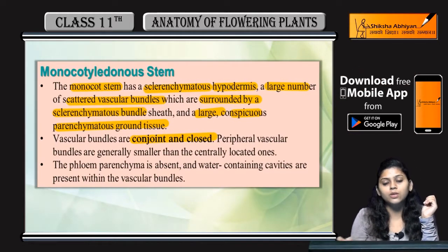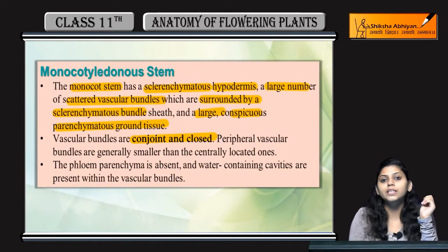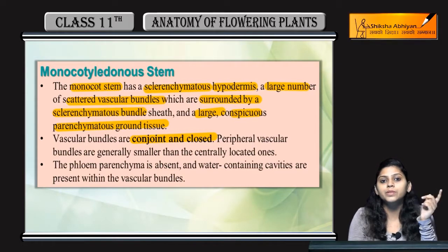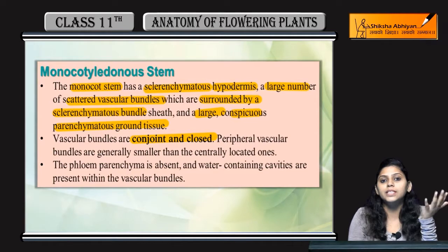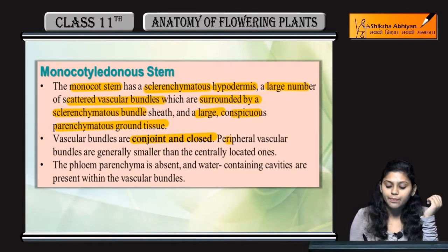Vascular bundles are conjoint and closed. Closed means cambium is absent, so secondary xylem and secondary phloem will not be formed.